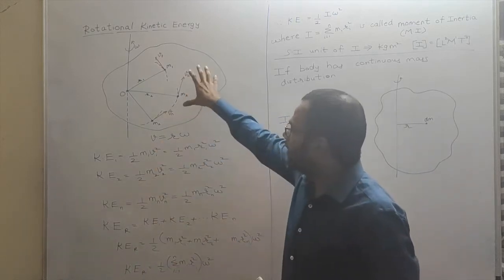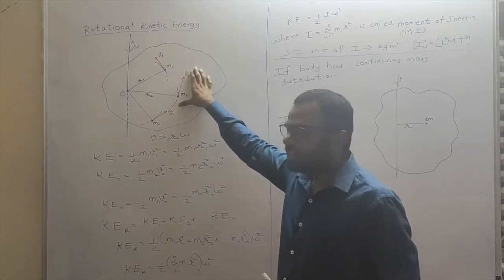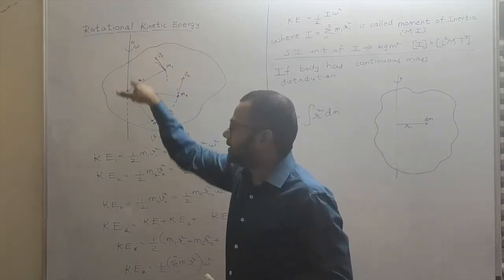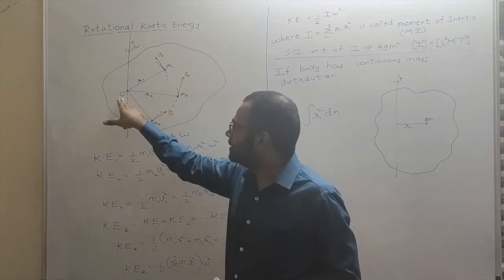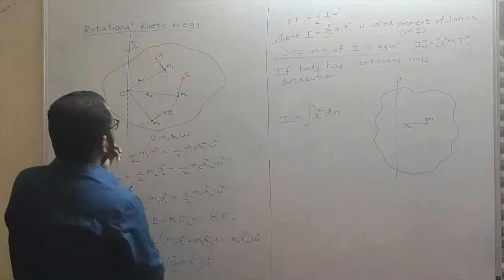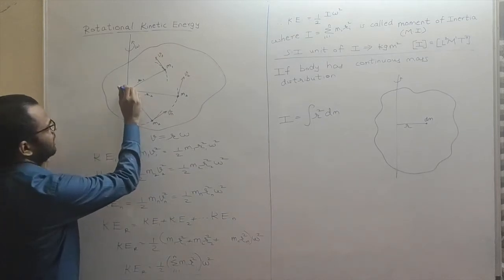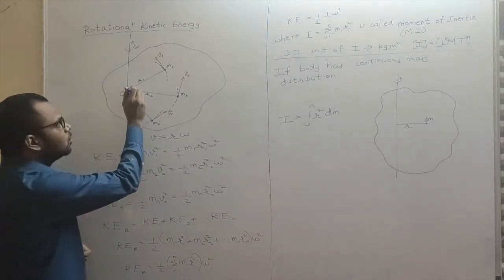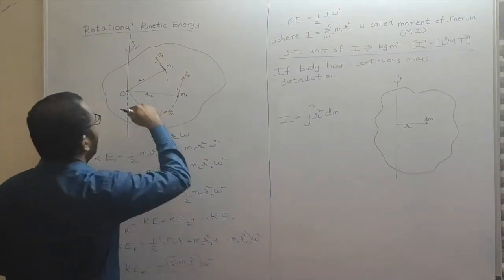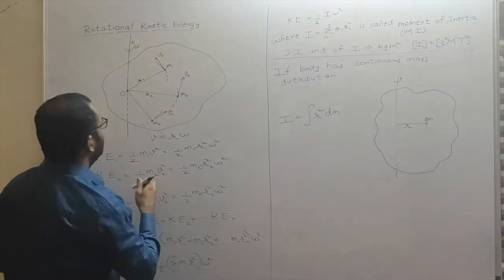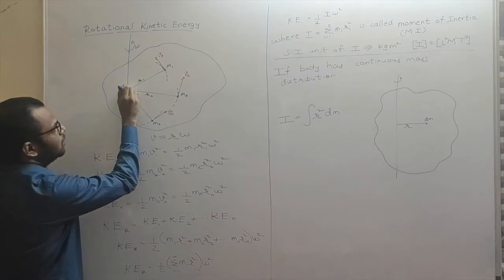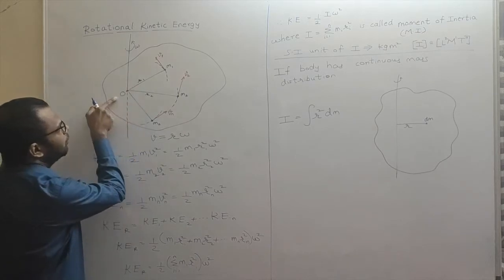So once again I have a body which is rotating about an axis. This is the axis passing through point O. Actually the axis is perpendicular to the board, passing through point O. Even though I have shown the axis to be like this, the actual axis is like this — passing perpendicular to the board through point O.